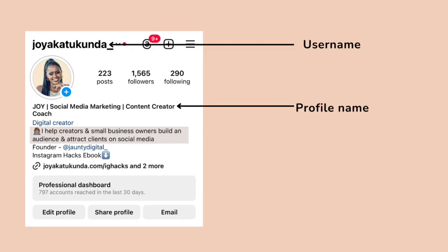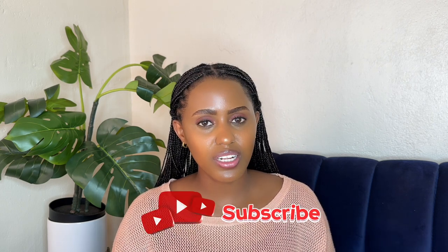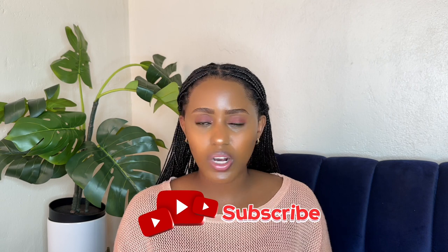Your profile name is different from your username. Your username is the one with the @ sign, for example @joyakatkonda, but your profile name is the one that appears right on top of your bio. Go to Edit Profile and add your name followed by your keywords — for example, mine has 'Joy' then a slash then 'social media marketing' then 'content creator coach.' So when someone searches for either 'social media marketing' or 'content creator coach,' my account appears in those search results. You can add about two or three keywords in your profile name, just make sure they are all relevant to what you do.